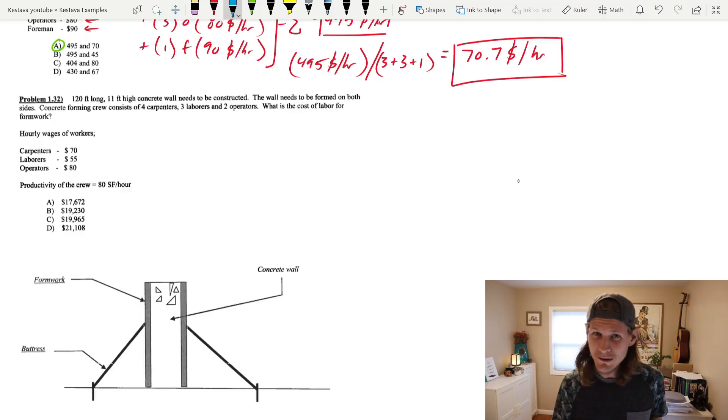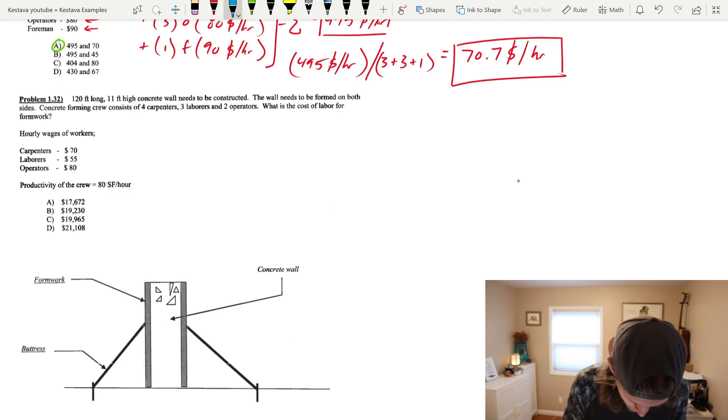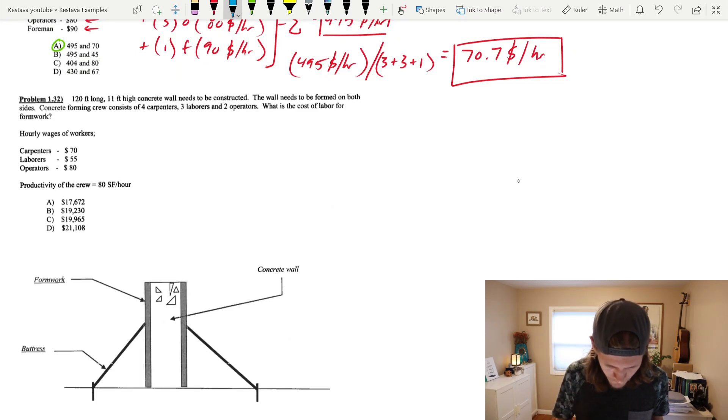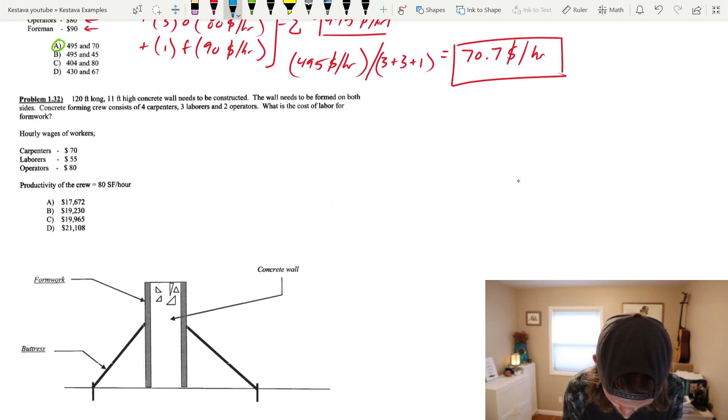Moving on to number two. So if you haven't yet, and I don't know why you wouldn't have yet, but subscribe down below. We've got a cozy seat in the auditorium ready for you. We have a 120 foot long by 11 foot high concrete wall that needs to be constructed. The wall needs to be formed on both sides. Concrete forming crews consist of four carpenters, three laborers, and two operators. What is the cost of labor for formwork?